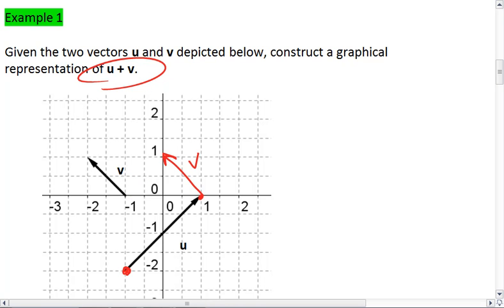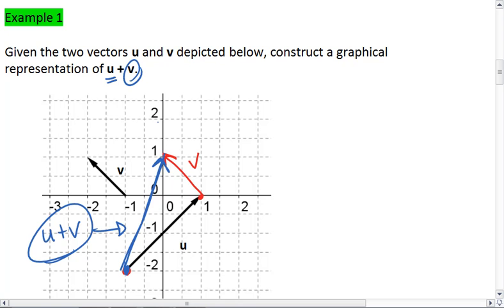We then can draw a vector from u's initial point to v's terminal point. This blue vector that I just drew, that vector is the vector of u plus v. So the whole process here is you start with vector u. Wherever u ends, wherever u's terminal point is, that's where you stick on v's initial point, and then you follow vector v. You then connect the very beginning to the very end, and that's your vector u plus v.